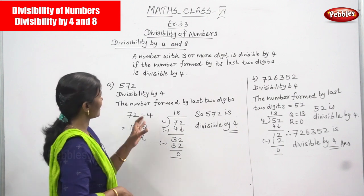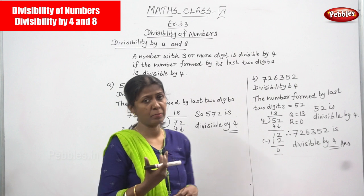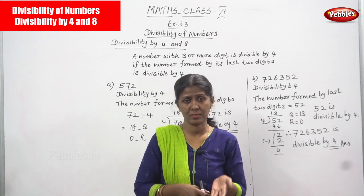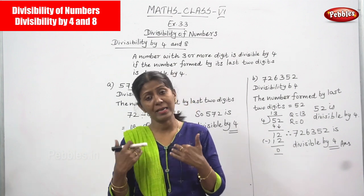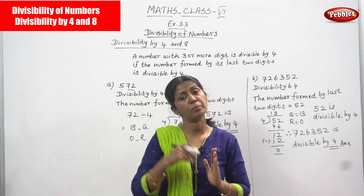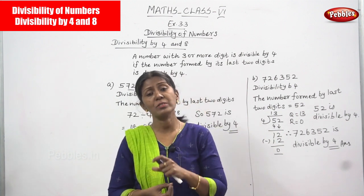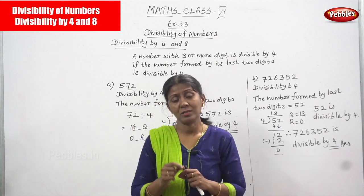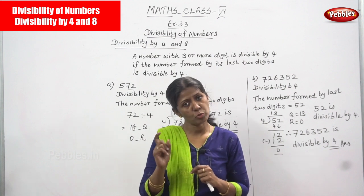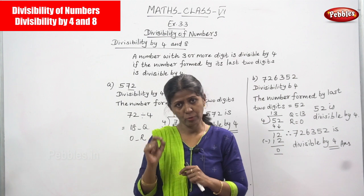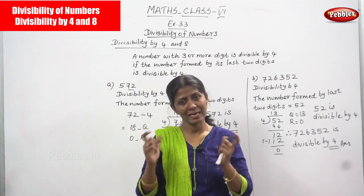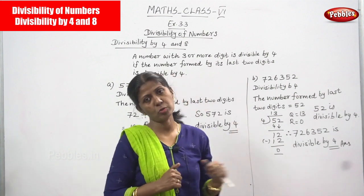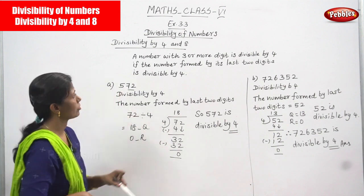So the explanation is: you take any number, but the number must be three digits or more than three digits. What you're going to do is check whether the number is divisible by 4 or not. The rule is: you have to take the last two digits and find out if the last two digits are divisible by 4. If they are, the entire number — whether three digits or more — is divisible by 4.